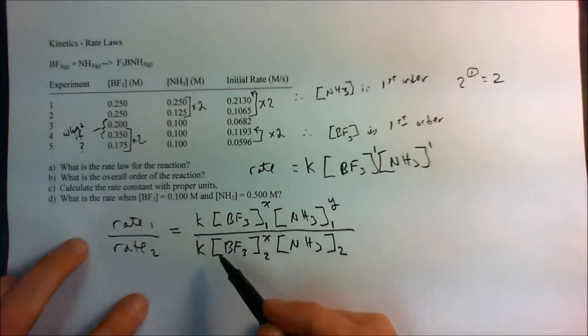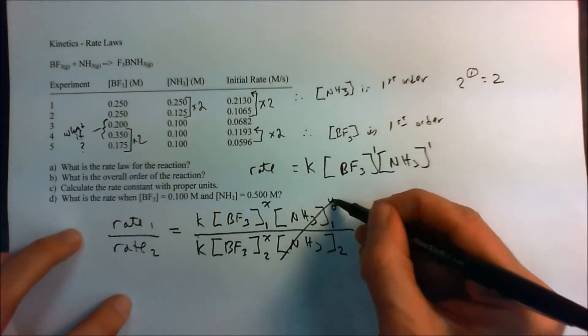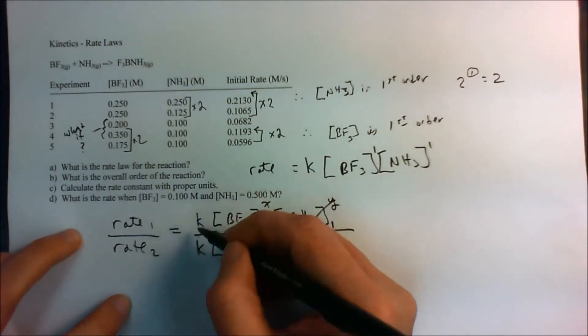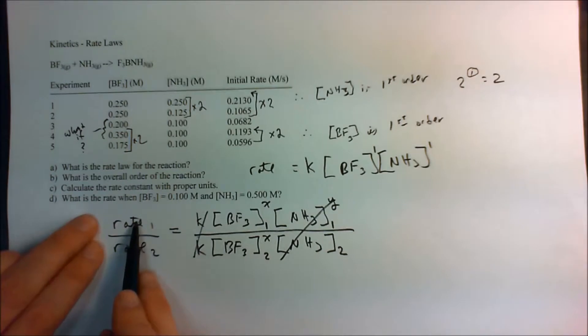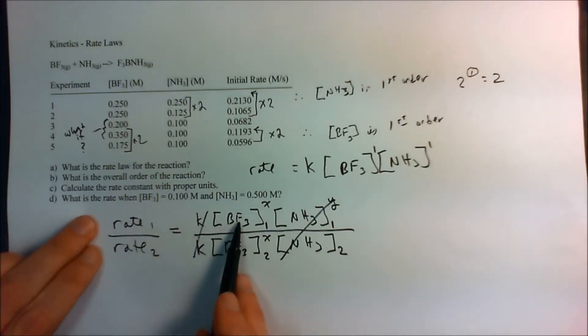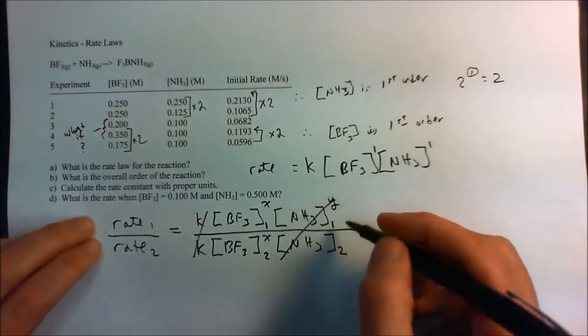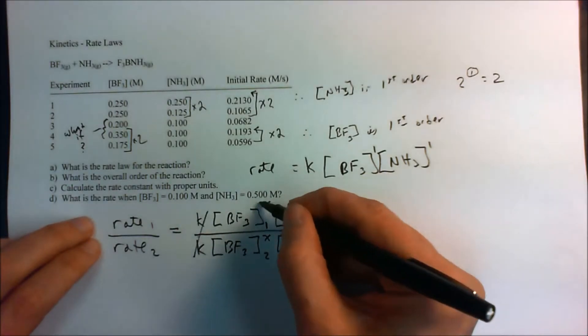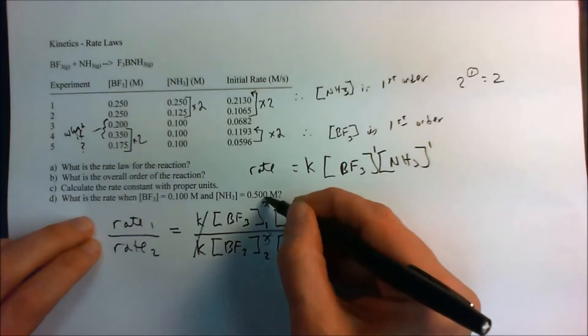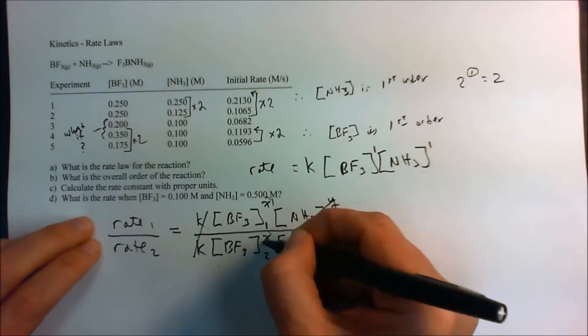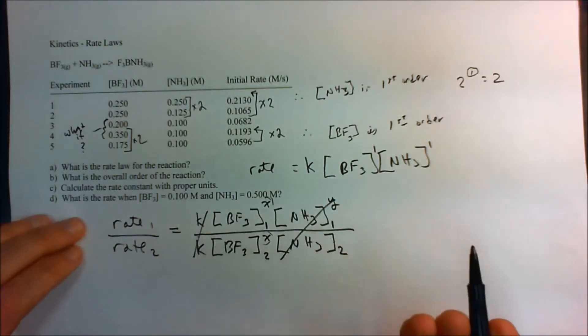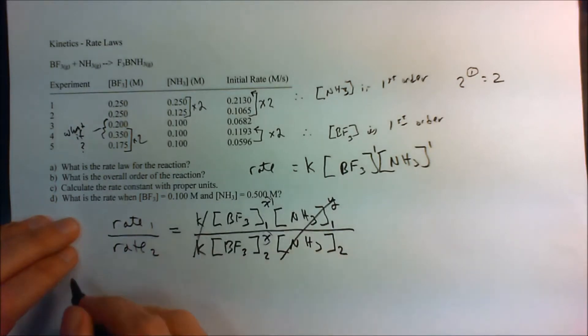And so anything that's a constant, we can cancel. The rate constant's not going to change. So the only thing that's changing is your rate, and it's going to depend on the concentration of your boron trifluoride at two different concentrations. And you have two different rates. And so what we can do is we need to get this exponent out, because that's going to be our rate order with respect to boron trifluoride. And what we can do is just take the natural log of both sides.